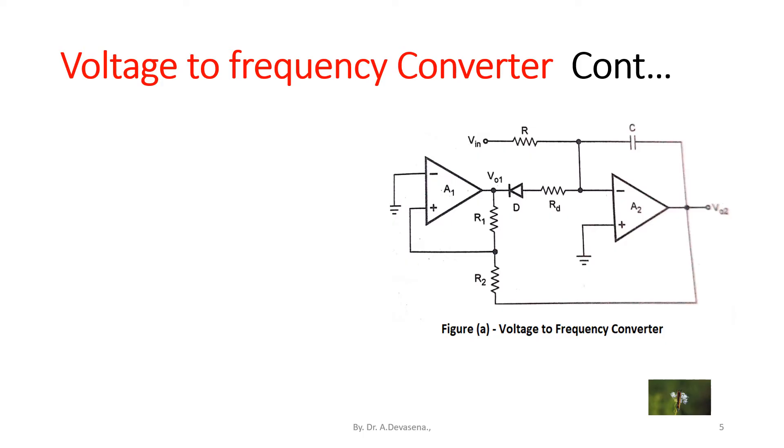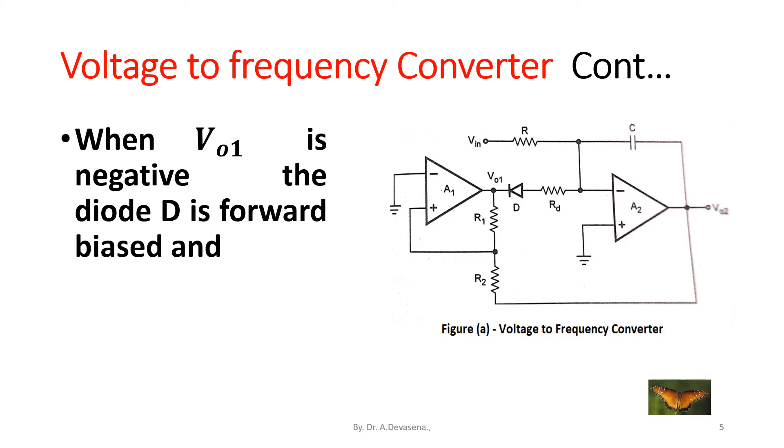When output of the op-amp A1, V_o1, is negative, the diode D that is connected to A1 is forward biased and the capacitor C starts charging.